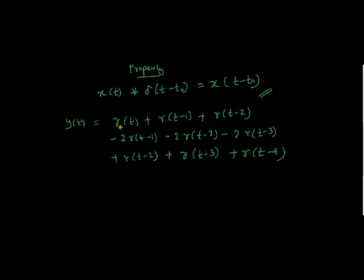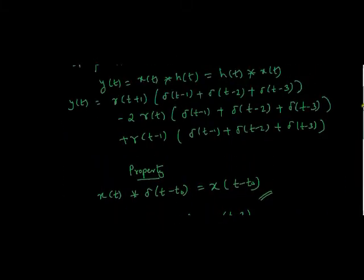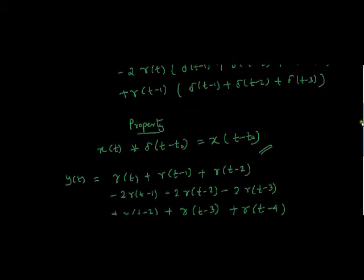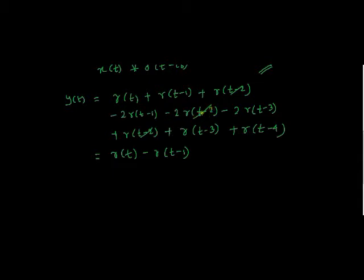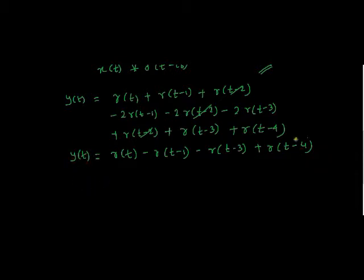I have simplified the equation. As you can see, r of t minus 1 minus 2r of t minus 1 gives minus r of t minus 1. The two terms r of t minus 2 and minus 2 times r of t minus 2 cancel each other. And adding minus 2 times r of t minus 3 plus 1 times r of t minus 3 gives minus r of t minus 3, leaving us with a final term of r of t minus 4.